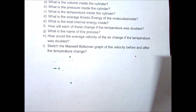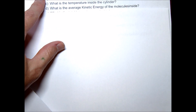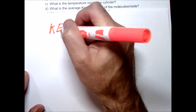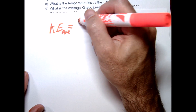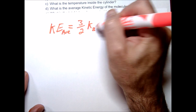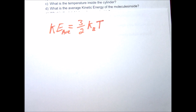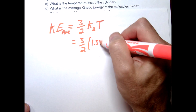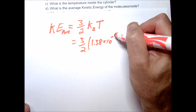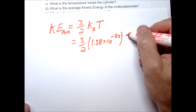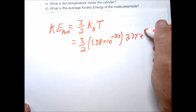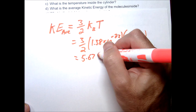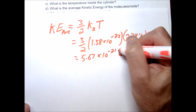The next question looks at kinetic energy. Kinetic energy is proportional to temperature — specifically, the average kinetic energy is (3/2) times the Boltzmann constant times temperature. So: (3/2) × 1.38 × 10⁻²³ × 274 K gives an average kinetic energy of 5.67 × 10⁻²¹ joules. This is a very small number because we're talking about individual molecules.